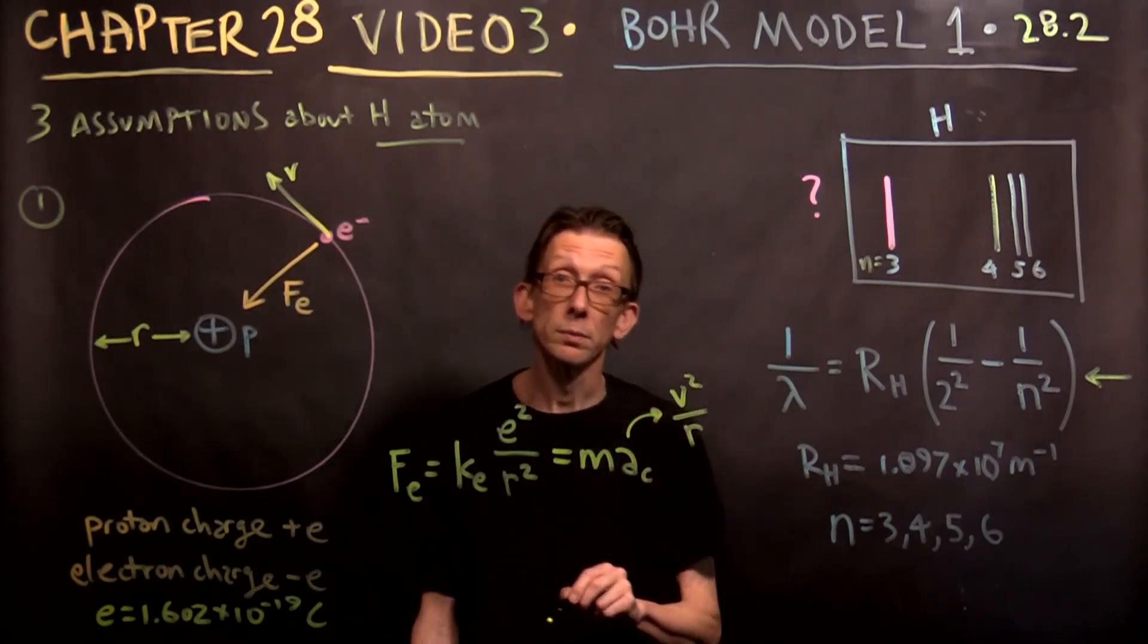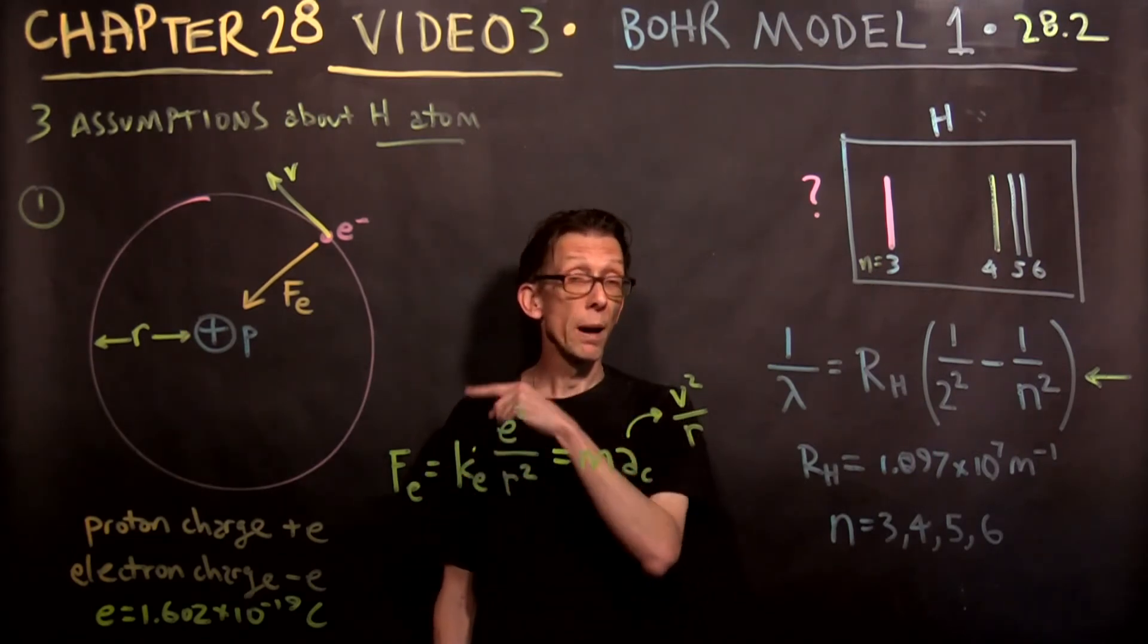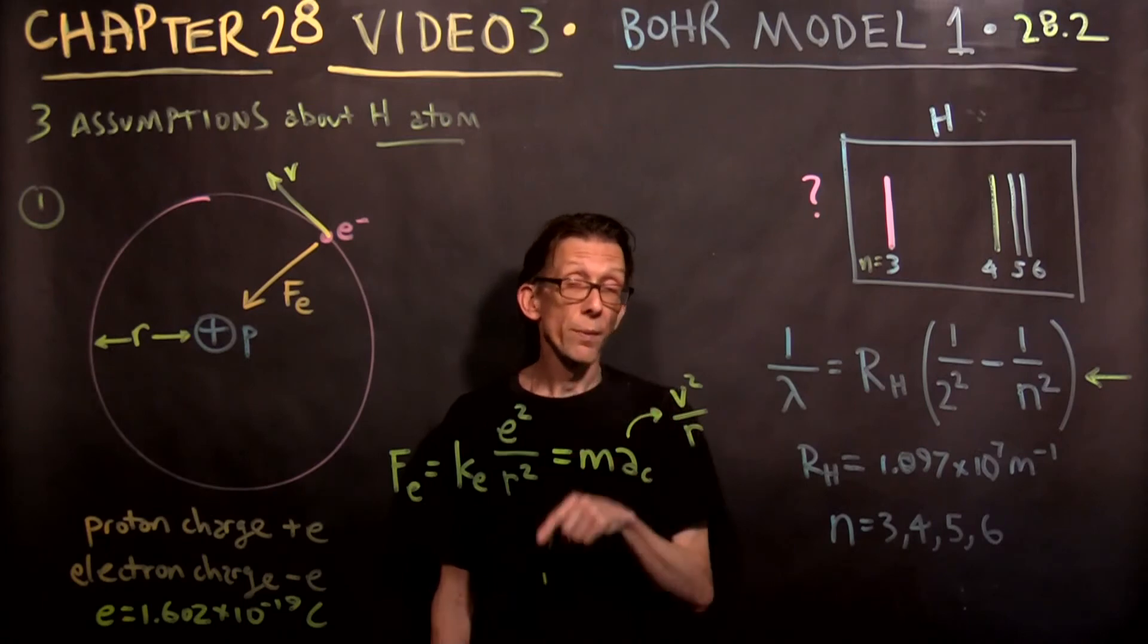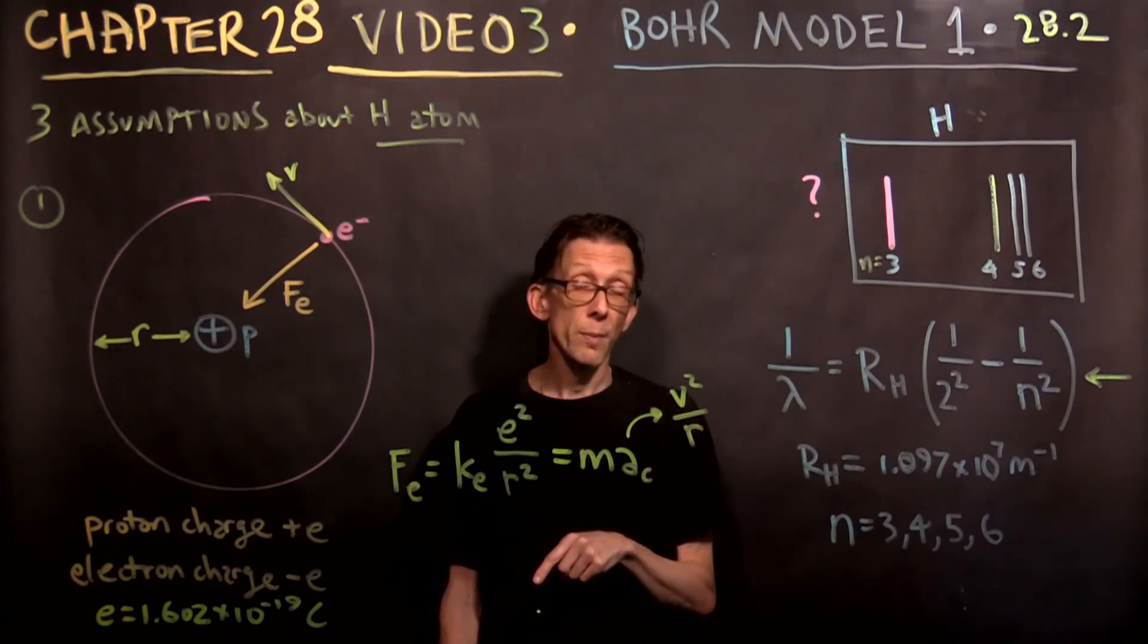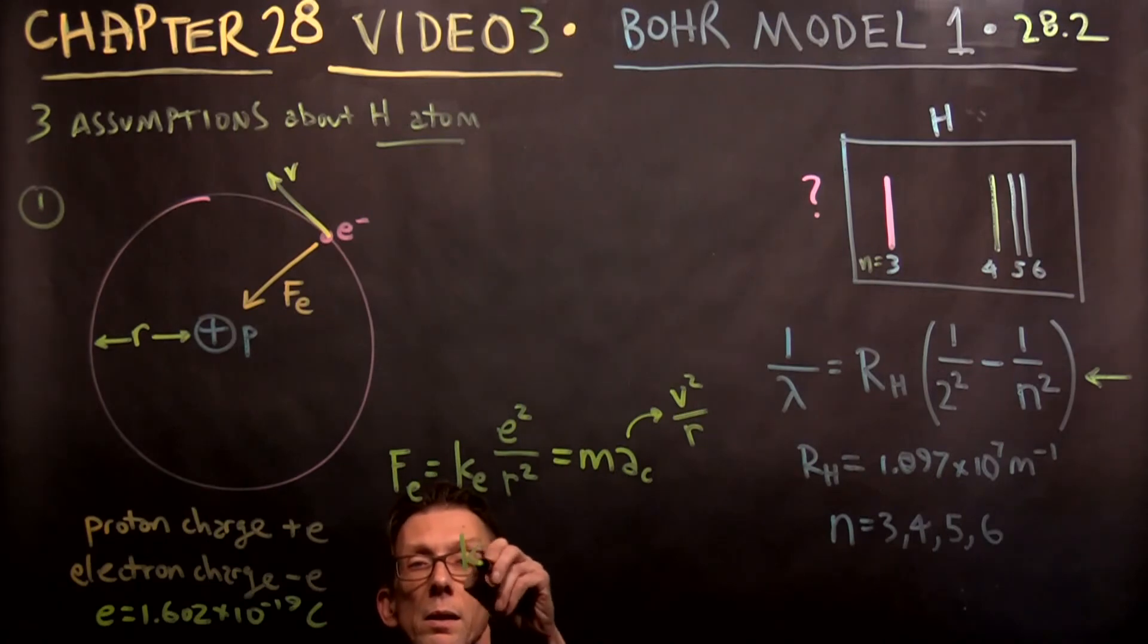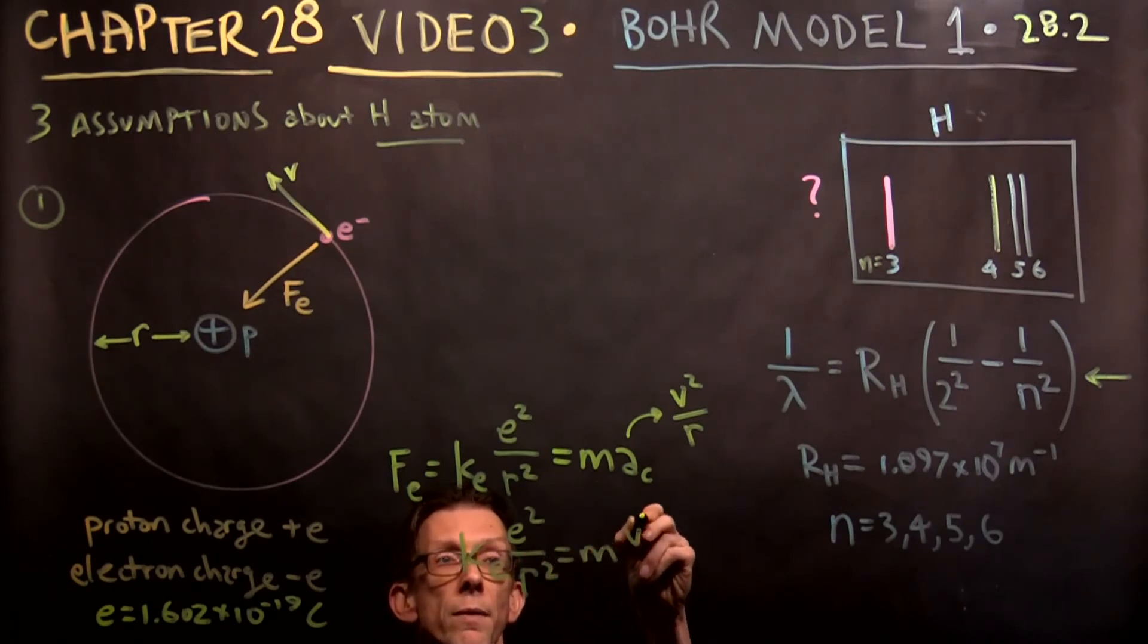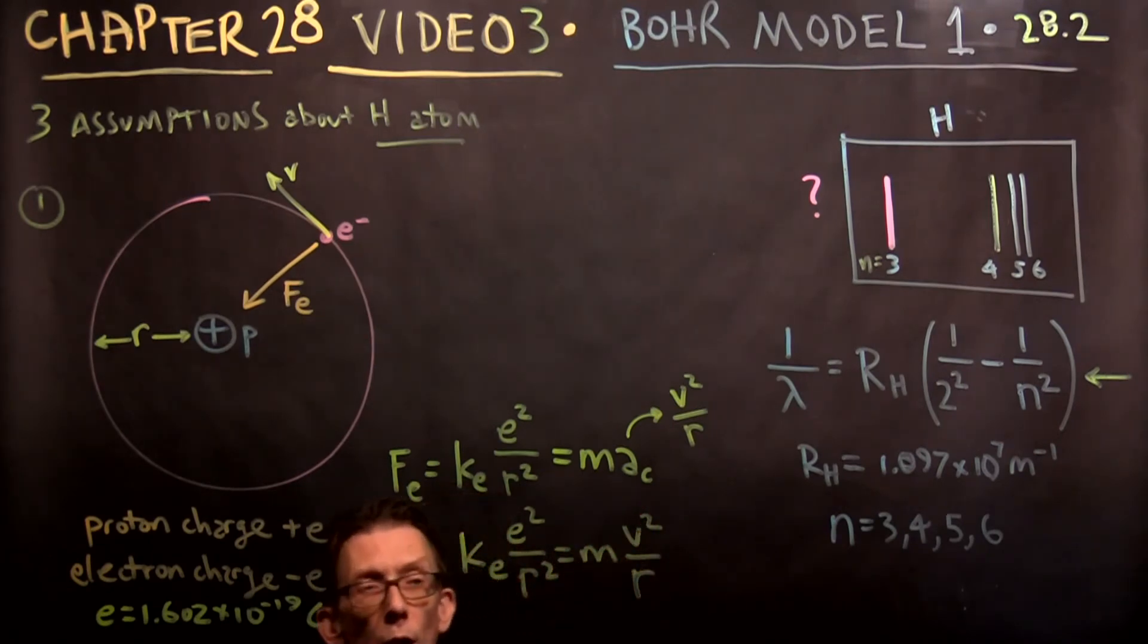As we saw earlier in the class, earlier in the semester, we talked about the motion of that particle in the magnetic field. So we can write ke times e squared over r squared equals m v squared over r.